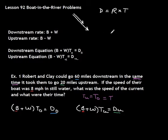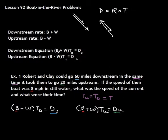When the boat is going upstream, we have a problem because the current is pushing against it, so we have to subtract off the rate of the current. Some problems use C for current; this book uses W for water. If you're going downstream, you add the water current. If you're going upstream, you subtract the water current. The rate downstream is B plus W, and the rate upstream is B minus W.